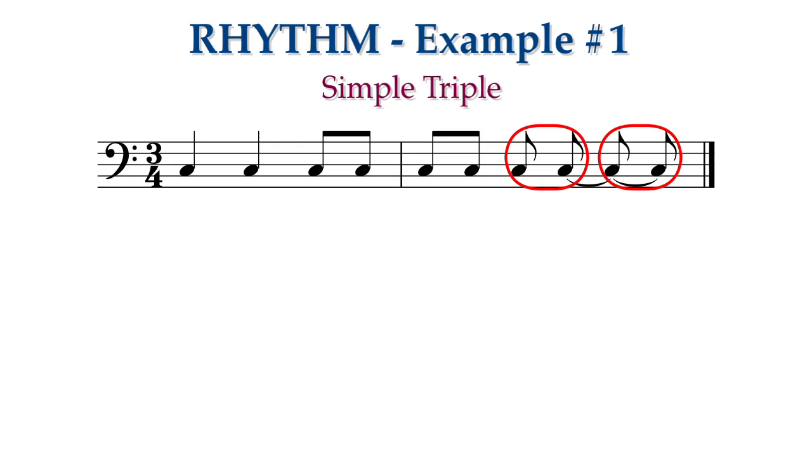In the second measure, the first beat has two eighth notes that are connected by a beam. The second beat also has two eighth notes that need to be played, but the second eighth note is tied to the first eighth note of the next beat. Connect the two eighth notes of beat two with a beam, and you will tie the second eighth note to the first note of beat three.